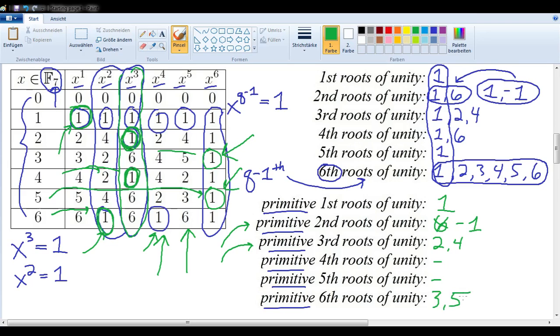So, what's so special about these primitive roots of unity? Well, we can see that there are fewer of them. Just to take this example, the 6th roots of unity, we had 1, 2, 3, 4, 5, and 6. And the primitive 6th roots of unity, we only have 3 and 5. So, what's so special about them? Well, these primitive roots of unity generate the rest of these roots of unity.